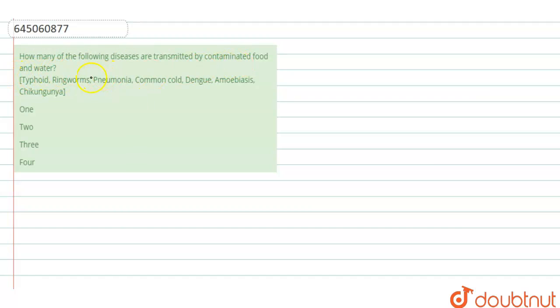Hello everyone. The question here is: how many of the following diseases are transmitted by contaminated food and water? The diseases given are: typhoid, ringworm, pneumonia, common cold, dengue, amoebiasis, and chikungunya.